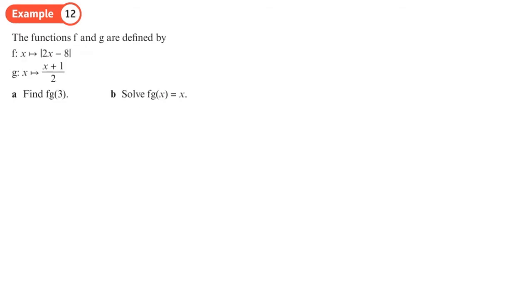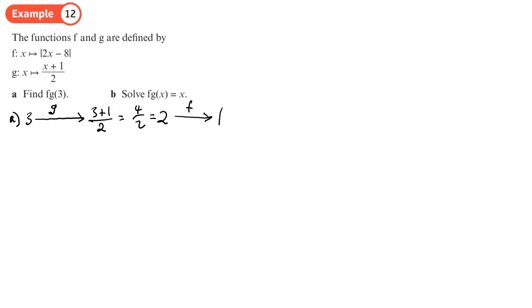This time one of the functions is a modulus. We still use the same method. We take the number 3 and put it into g, so that means 3 + 1 over 2, which equals 4 over 2, which is 2. Then we put 2 into f, which says do 2 times 2 minus 8 and find the modulus of that — the modulus of (4 − 8) = modulus of −4 = 4.